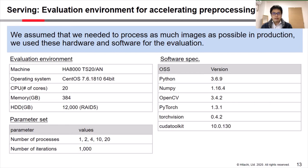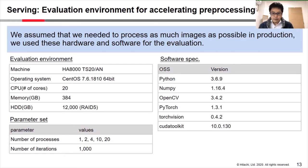This is the parameter set. We changed the number of processes from 1 to 20 to observe the effect of parallelism in production. Also, we iterated the preprocessing 1000 times. The software specifications are shown in the right table, listing the open source software and versions we selected.